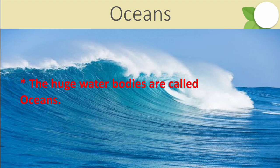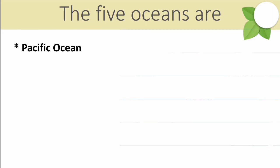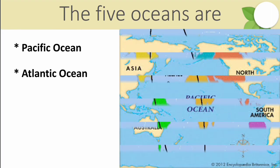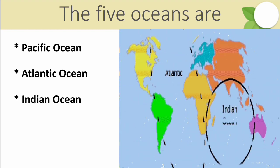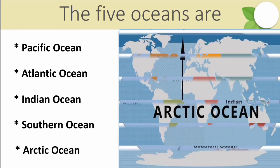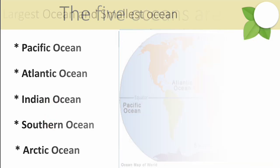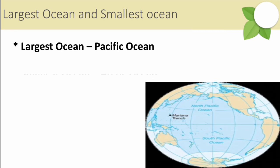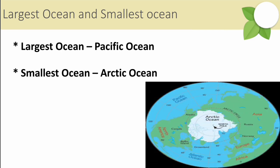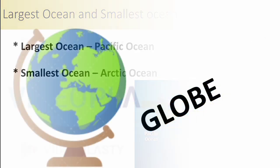Oceans are huge water bodies and there are five oceans on the earth's surface: Pacific Ocean, Atlantic Ocean, Indian Ocean, Southern Ocean and Arctic Ocean. The largest ocean is the Pacific Ocean and the smallest is the Arctic Ocean.